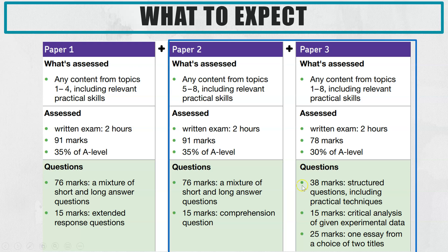Paper 2 is 91 marks, 2 hours long, and that is 35% of your overall A-Level grade. It's a mixture of long and short answer questions, and the big thing unique to paper 2 is that the final question is a comprehension question, which we'll come to later.